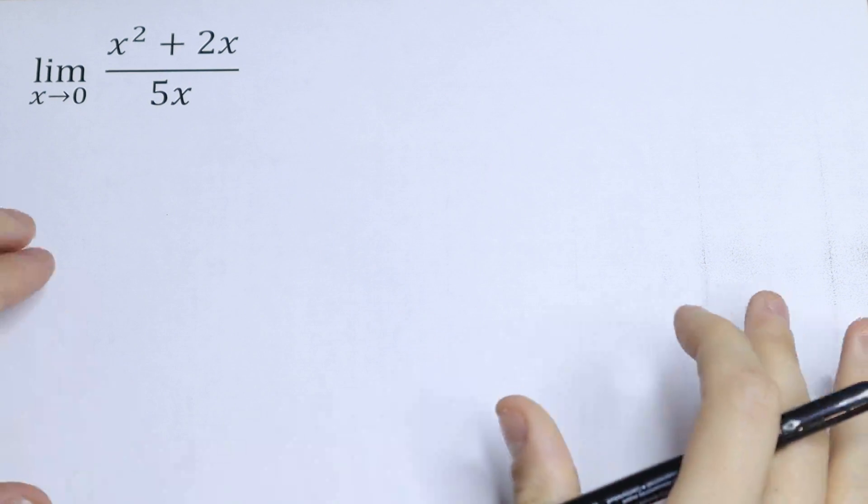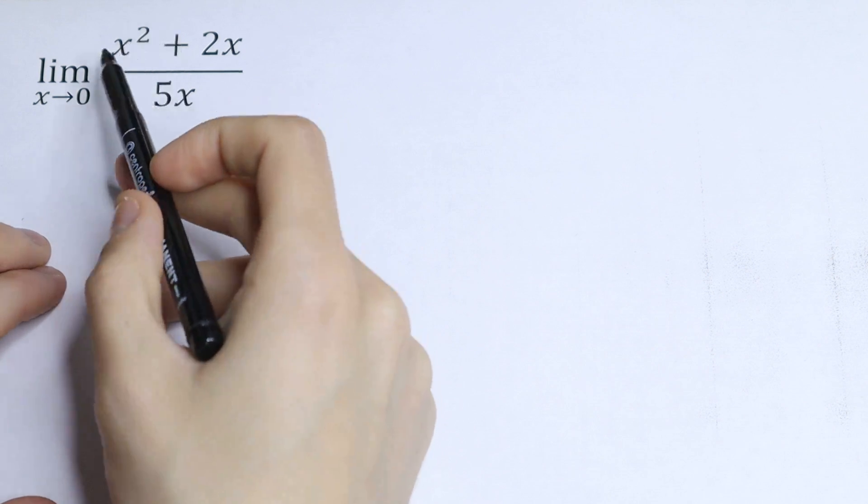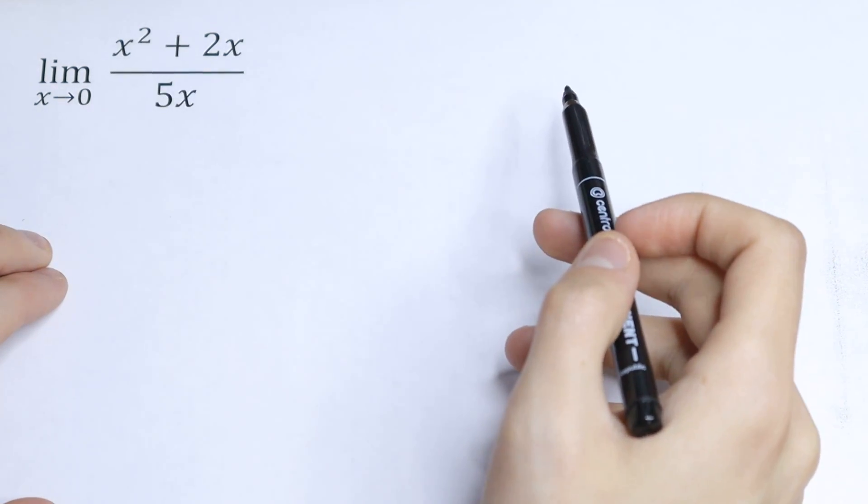Hello everyone, welcome back to high mathematics. Today we have an interesting limit. What is the limit as x approaches to 0 of the function x squared plus 2x all over 5x?